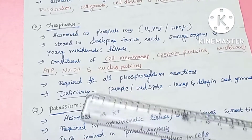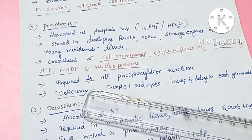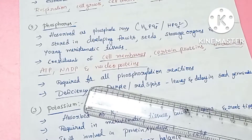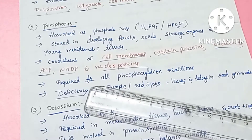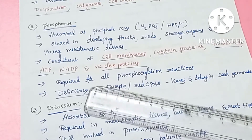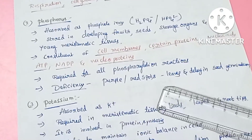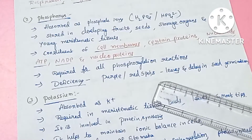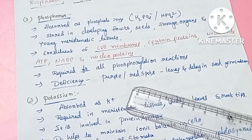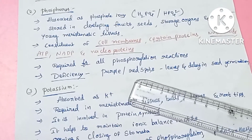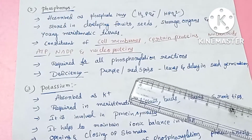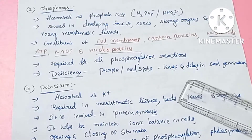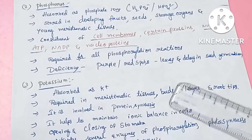Phosphorus is also found in various forms in the plant. Deficiency symptoms include red and purple color spots on leaves, and poor seed germination.